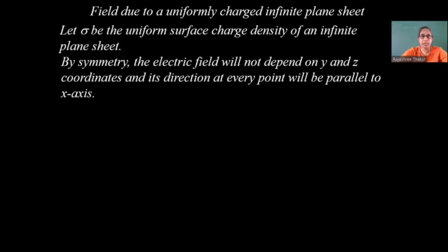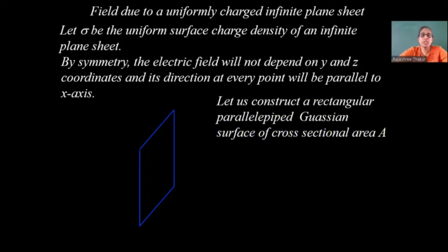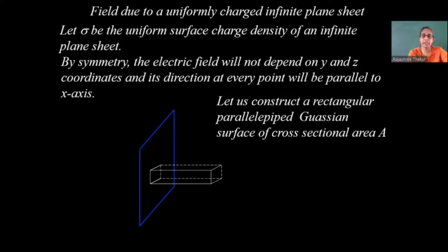The electric field direction will be parallel to the x axis. Let us take this plane sheet and consider it to be positively charged. Now let us construct a Gaussian surface — a rectangular parallelepiped with cross-sectional area A. We are constructing a Gaussian surface which has cross-sectional area A on each face.